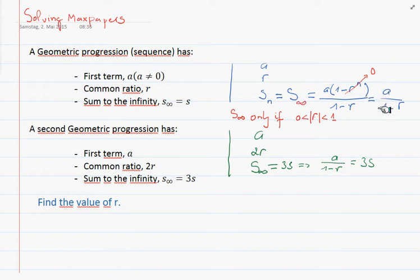In our second geometric sequence we're having the first term equals to a, the common ratio 2r, and sum to the infinity 3s.